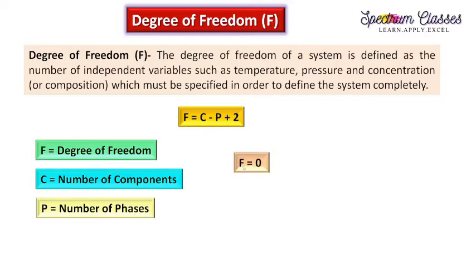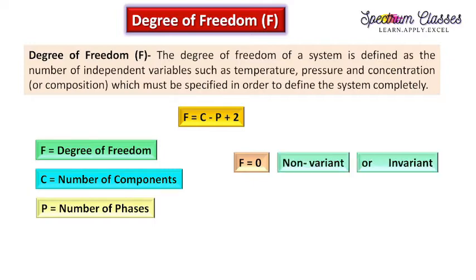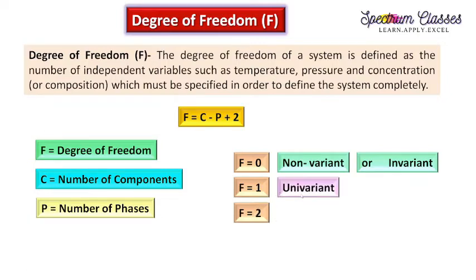If F is equal to 0, there is zero degree of freedom and the terminology used is non-variant or invariant system. If degree of freedom is equal to 1, then the system is called a univariant system. If degree of freedom is 2 then it is known as bivariant, and similarly trivariant and so on. How we are going to infer the meaning of these degrees of freedom is what we are going to discuss here.